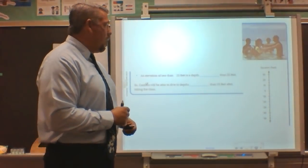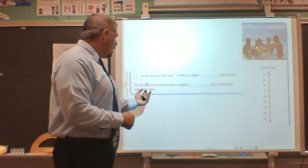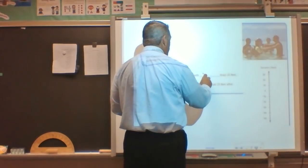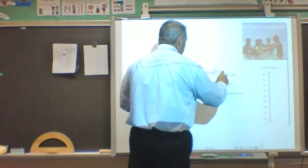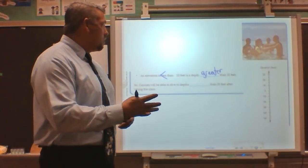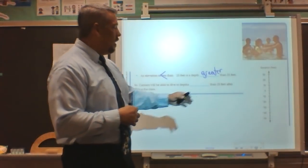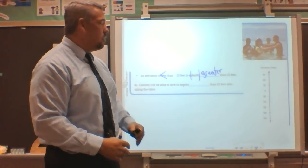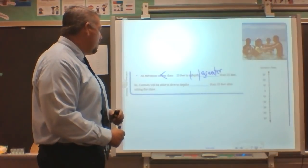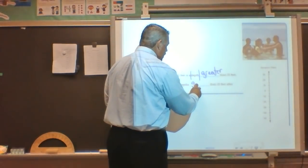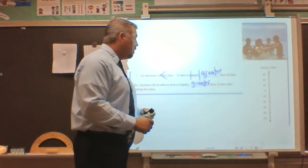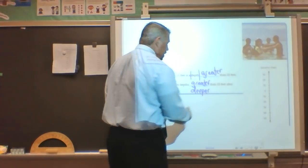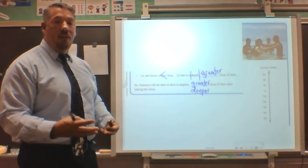When they ask me a question about it, they won't trip me up. An elevation of less than negative 25 feet is a depth that is greater than 25 feet. My elevation is my number on my number line — it has a lesser value, but when talking about absolute value (the depth), I've taken more steps than 25. So Cameron will be able to dive to a depth greater than 25 feet.